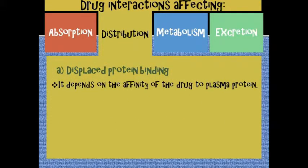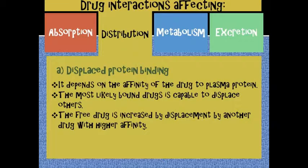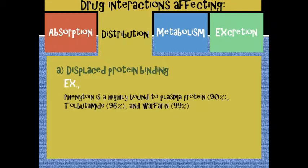The next topic is drug interactions affecting distribution. First is displaced protein binding, which depends on the affinity of the drug to plasma proteins. The most highly bound drug is capable of displacing others, and the free drug is increased by displacement by another drug with higher affinity. For example, phenytoin, tolbutamide, and warfarin are highly bound to plasma proteins. The drugs that displace these agents are aspirin, sulfonamides, and phenylbutazone.